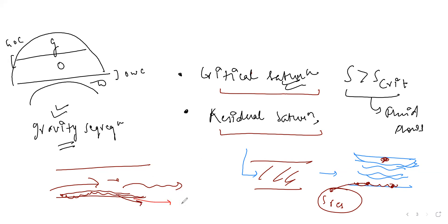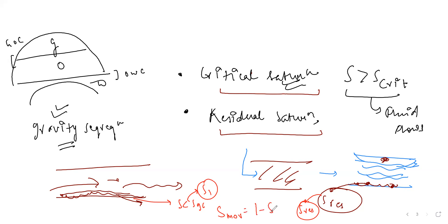So we have two immovable components: saturation below critical (S < S_gc) and residual saturation (S_res). One minus the sum of these immovable components gives you what is movable. The movable portion is what can be recovered, and that is what we focus on.